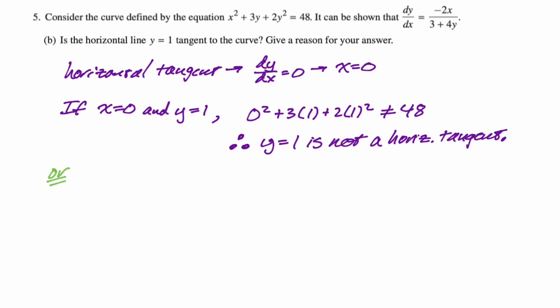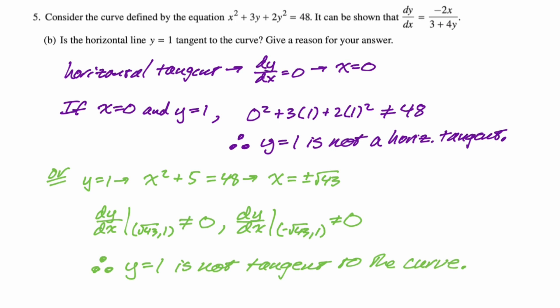Alternatively, I think what you could do is you could say, well, if y equals 1, what does x have to equal, right? So if y is 1, then we would have x squared plus 3 plus 2, so plus 5, equals 48, which would mean x is plus or minus root 43, and then let's just look at the slope at those. So if we do dy/dx such that the ordered pair root 43, comma 1, there's no way that that slope is 0, right? So not a horizontal tangent line there. And then, similarly, if we did that negative root 43, comma 1, the slope is not 0, so not a tangent line there. So we can say y equals 1 is not tangent to the curve. I think either of those approaches is totally fine. Answers the question.